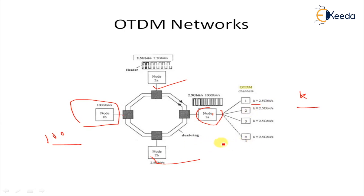Naturally, the OTDM node has to know about the processing capabilities of its destination node when it wants to transmit packets to them. This is the basic configuration of this particular network.